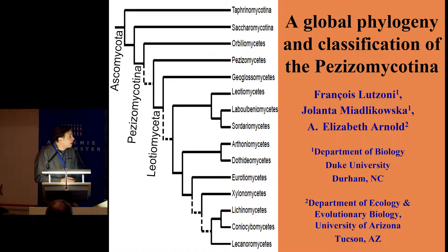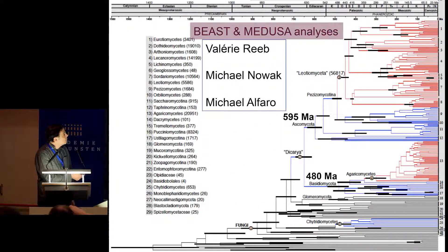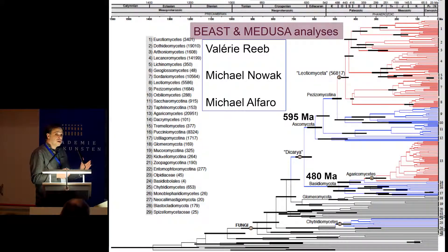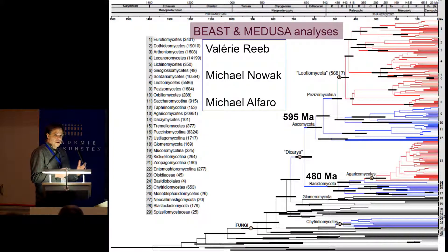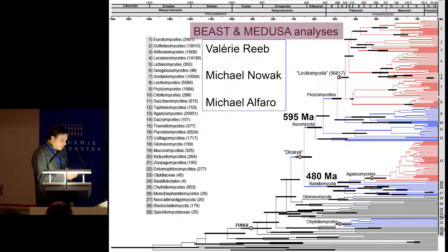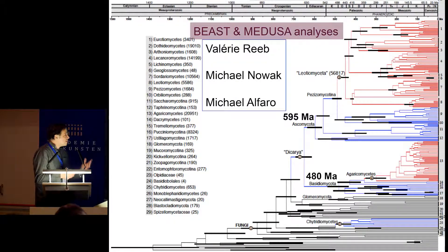As you all know, the current classifications are based on phylogenies, and therefore these classifications are capturing, in a way, the evolutionary history of these fungi, and also, to a certain degree, their ecology and their biology in general. So therefore, if we want to really gain a better understanding of those classifications, it's important that we look at their evolutionary history.